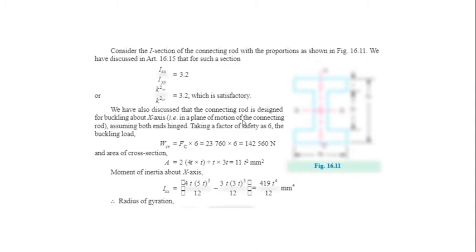The connecting rod converts the reciprocating motion of the piston into rotary motion of the crankshaft. It is made by a forging process and has an I-section cross-section. In the cross-sectional view, there are two axes: XX and YY. From the I-section diagram, we can calculate I_xx and derive k_xx² and k_yy² accordingly.